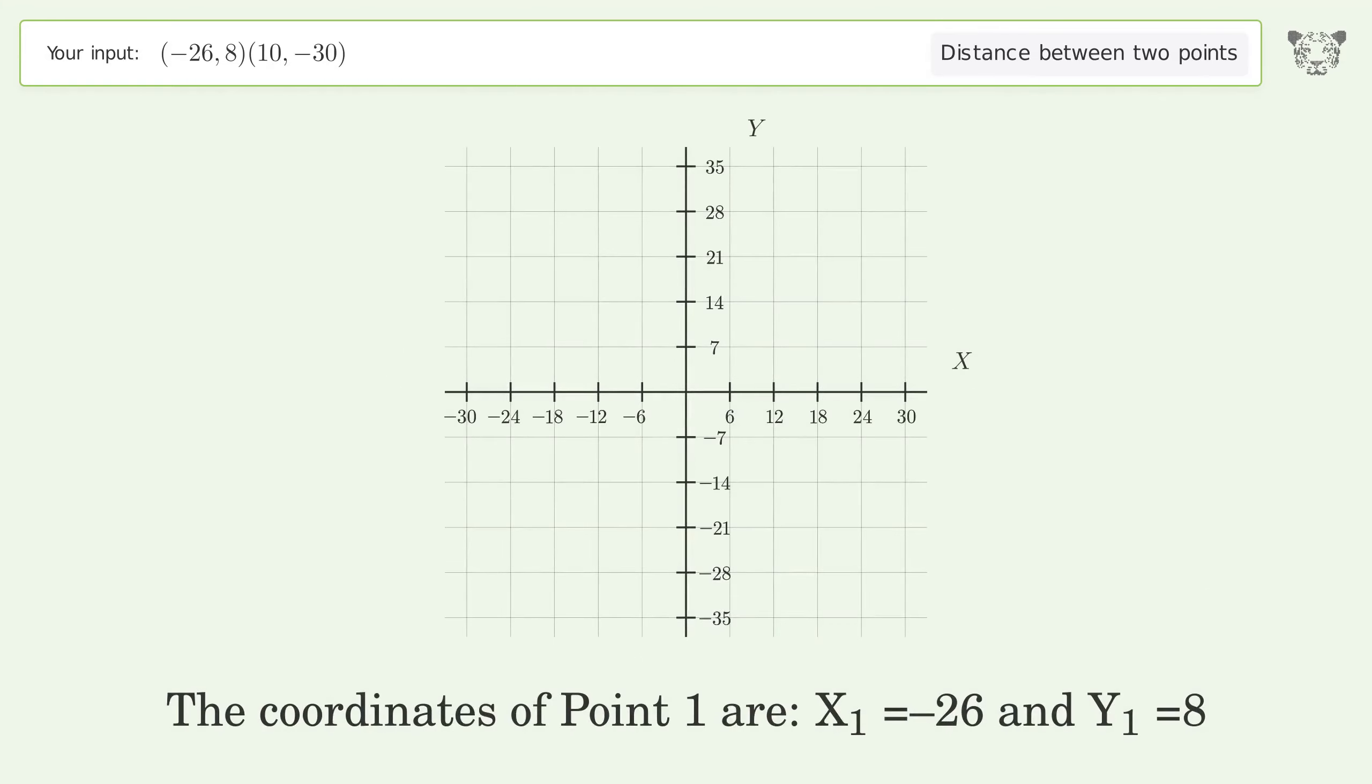The coordinates of point 1 are x1 equals negative 26 and y1 equals 8. The coordinates of point 2 are x2 equals 10 and y2 equals negative 30.